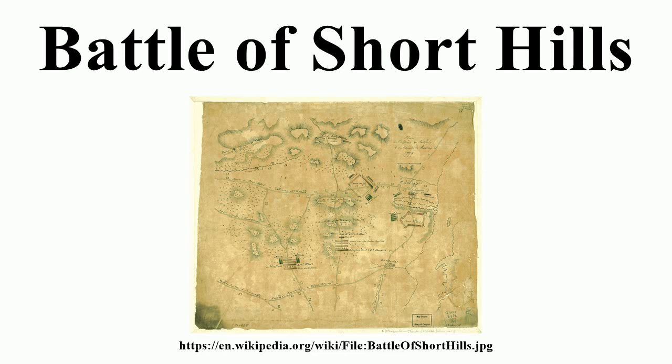On June 9, Howe began moving troops from Staten Island to Perth Amboy. On June 11, almost his entire army moved up the roads along the Raritan River to New Brunswick. Washington's intelligence reports indicated that Howe had left behind equipment needed for crossing the Delaware River and was unlikely to be heading for Philadelphia. Washington, as a precautionary measure, called out the militia in southern New Jersey.